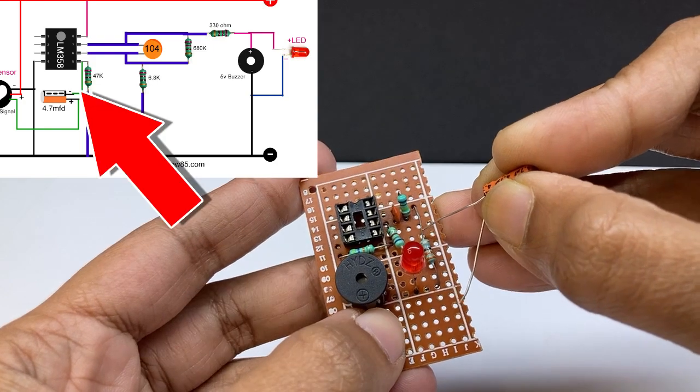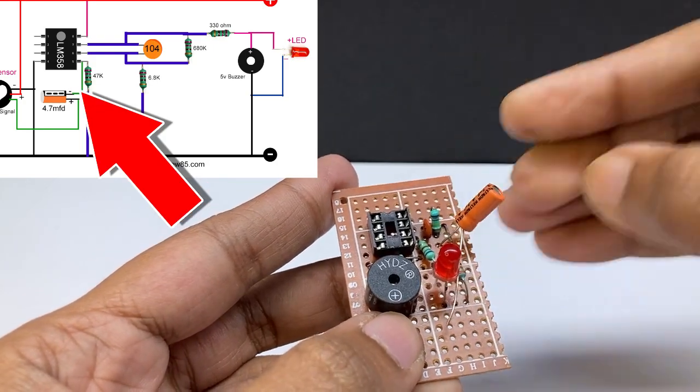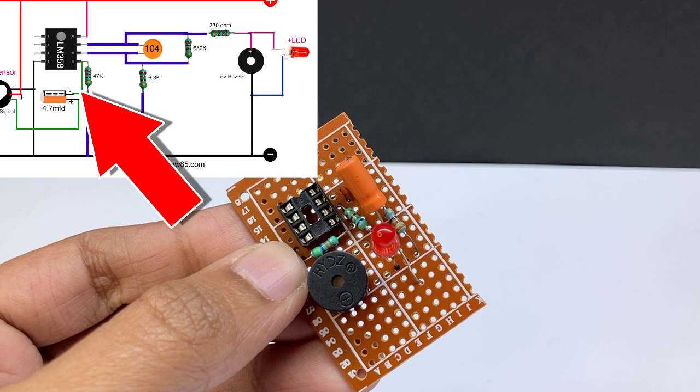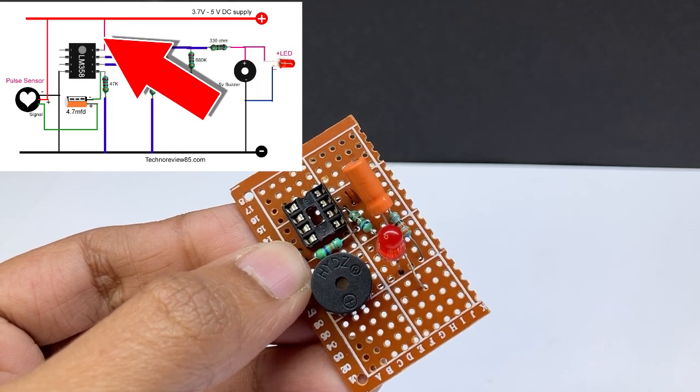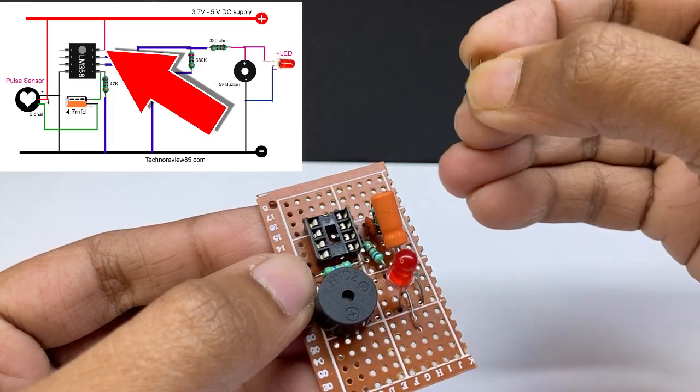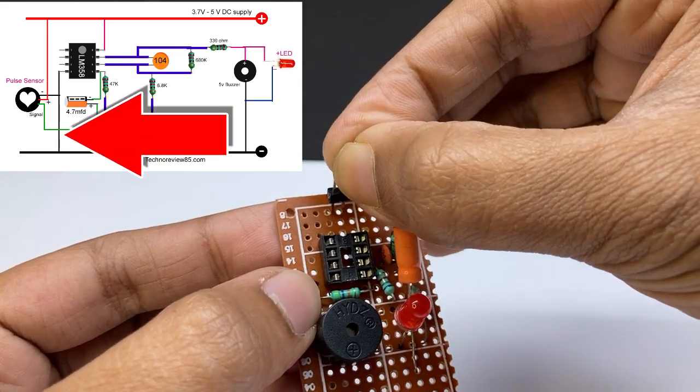Insert 4.7mF capacitor minus pin to IC pin 5. Positive supply connects to IC pin 8. Negative supply connects to IC pin 4.